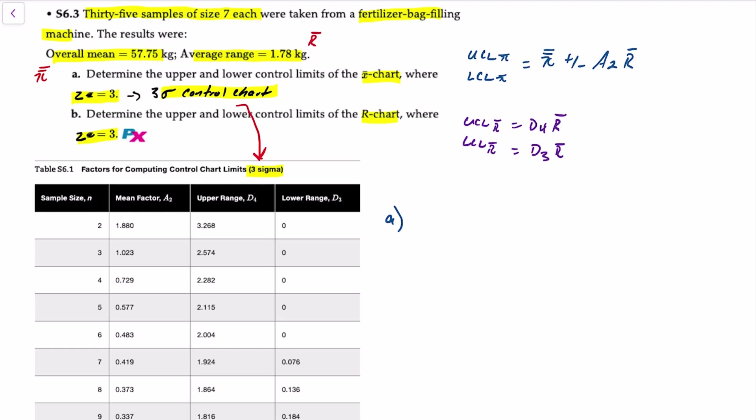For requirement A, we'll start with calculating our upper control limit for the mean to be equal to 57.75 kilograms plus, we're told that our sample size is seven, not 35. A lot of students get confused with that. There are 35 samples taken but only seven observations within each, so the sample size is seven. If we look at our table we want seven corresponding to an A2 factor of 0.419.